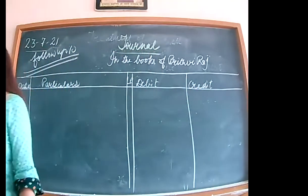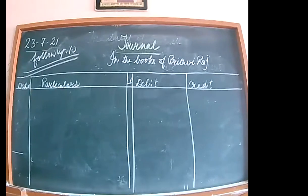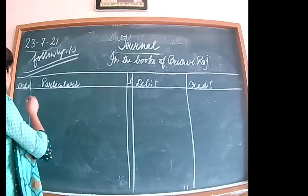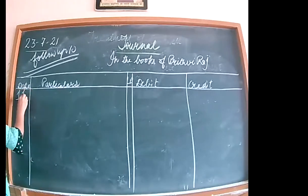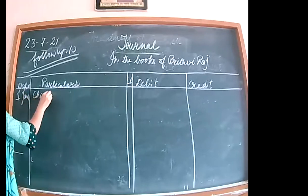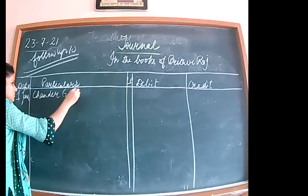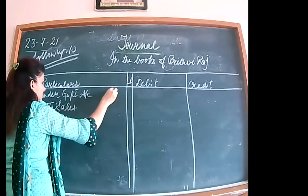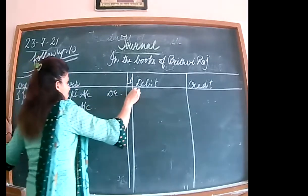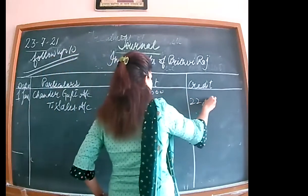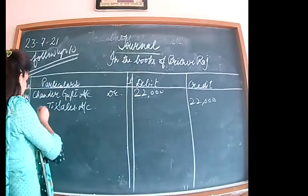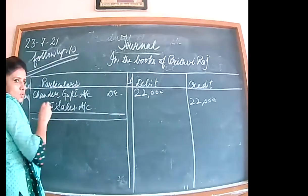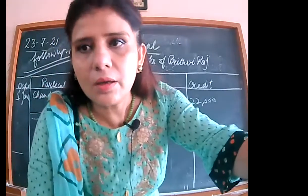Read the first transaction: goods sold to Chandar Gupta for Rs. 22,000. Whenever a person's name is given, sale is always assumed on credit basis. Entry: Chandar Gupta account debited to sales — Rs. 22,000. Narration: being goods sold on credit. Draw the double line to end the first entry.